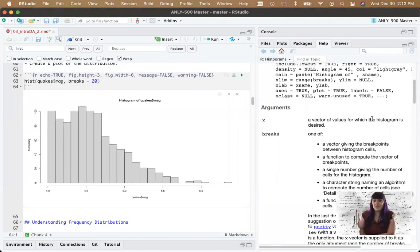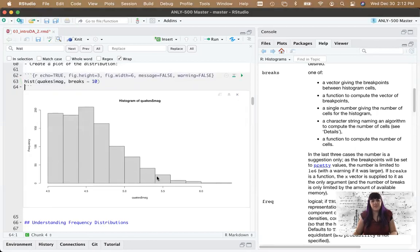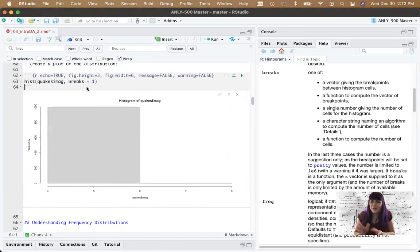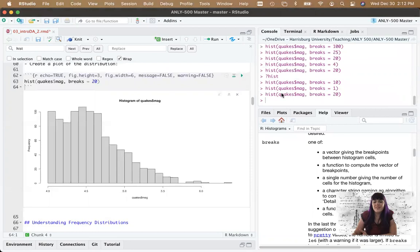Let's use the help, right? It's a question mark, hist. So breaks can be a vector giving the break points. It could be a function. It could be a number given the number of cells for the histogram. So I guess this is making 20 different. Oh, epiphany. So the number here is how many bars it's making. That makes a lot more sense. So that's why you get one here for one. So it's not the width of the window, it's how many bars you are. So here's why looking at the help is useful.